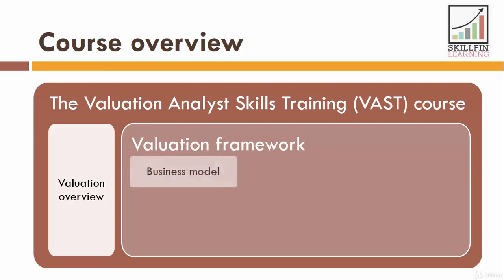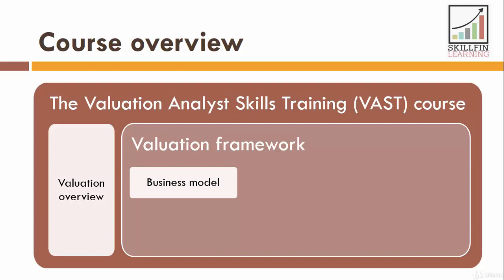In the third module, we will look into the first step of the valuation exercise, which is to understand the business model of the company. We will look at 5 different elements of a business to capture the overall operating model of any company. In the fourth module, we will illustrate the second step of the valuation framework, which is to show you how you could capture the historical financial statements of a company from its published annual reports. Without having the historical financial statements of a company, you cannot meaningfully proceed with the valuation exercise.